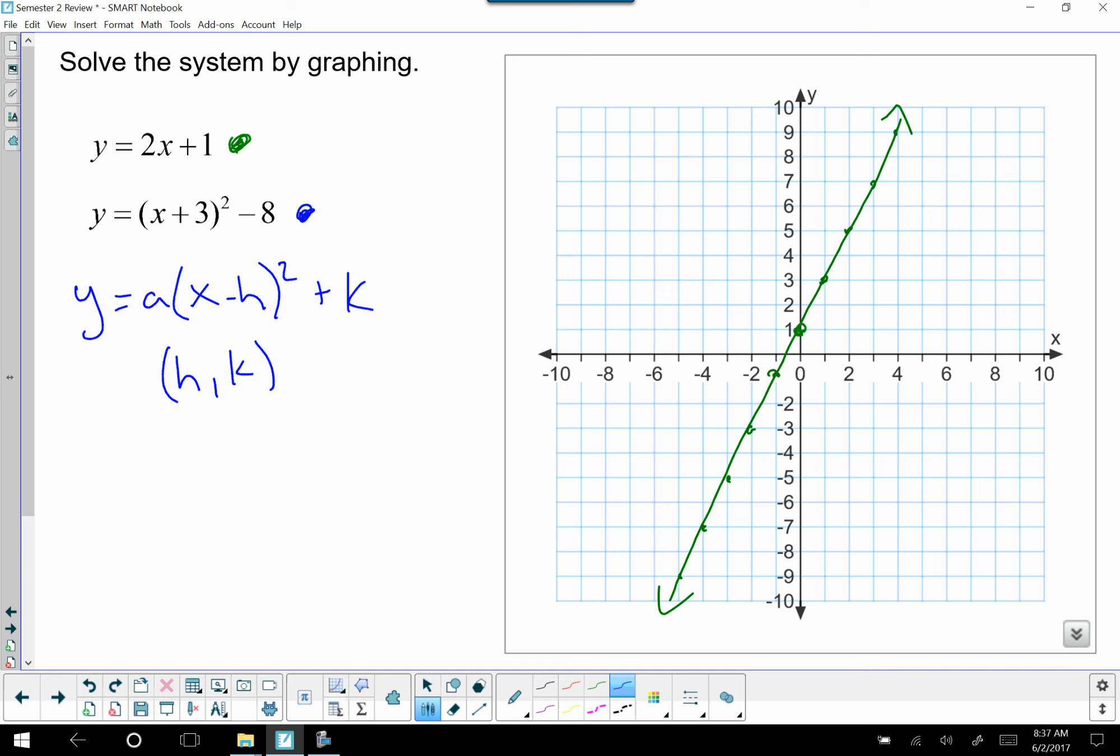But if you see the general form of the equation, it has a negative h, so we're going to take the opposite of what it says in there. Our equation says positive 3, so our vertex is negative 3, and we take k as is because it says positive k, so it's negative 3, negative 8 is our vertex.